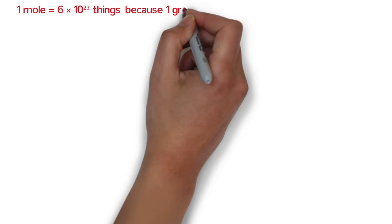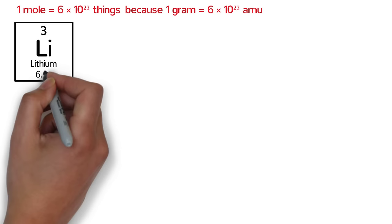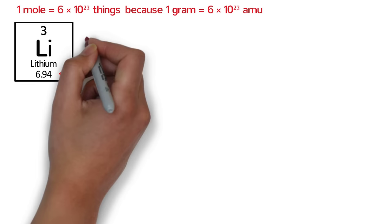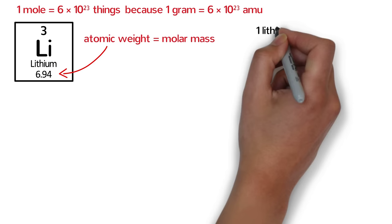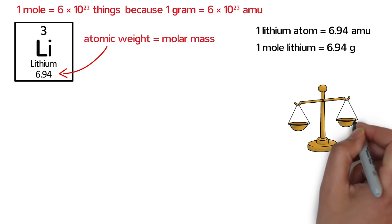Let's see what that means for a particular element. Break out your periodic table and look for lithium — it's the third element. On the bottom of the square, you should see the number 6.94. This is the atomic weight of lithium, but it is also the molar mass of lithium. So one lithium atom has an average mass of 6.94 amu, and one mole of lithium atoms has a mass of 6.94 grams. That gives us a convenient way to count atoms by weighing them, and the molar mass is the conversion factor between grams and moles.